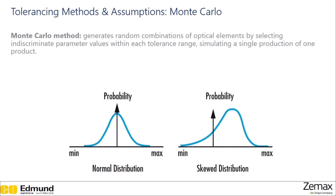Monte Carlo simulations are a method used to see how the tolerances from each individual optical element will combine to affect the system as a whole. Values are chosen at random from within the tolerance range for each element, then combined to see how the system operates. This is repeated many times to create a probability distribution showing the possible outcomes for making this assembly with this set of components and these tolerances. Generally, the distribution will be some sort of normal distribution with some most likely outcome, and ideally this most likely outcome will align with the performance you desire from your system.